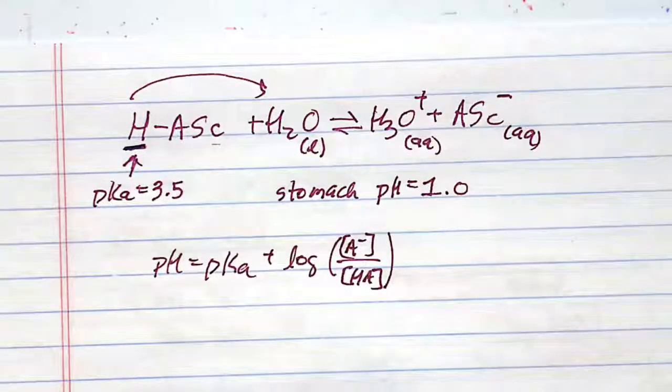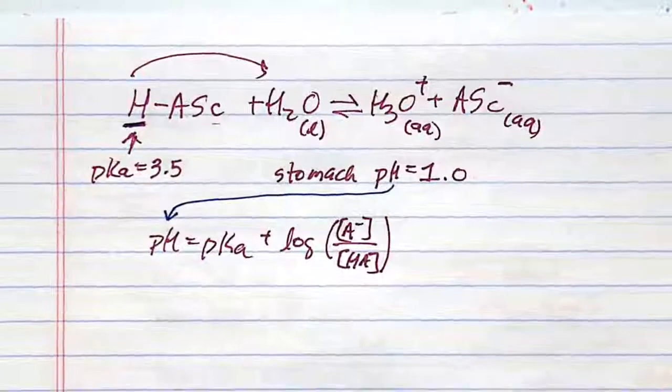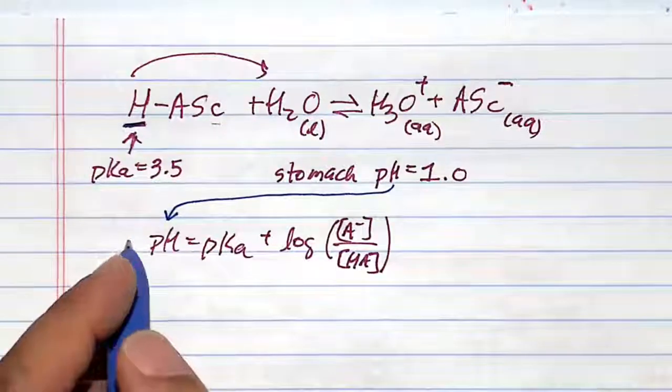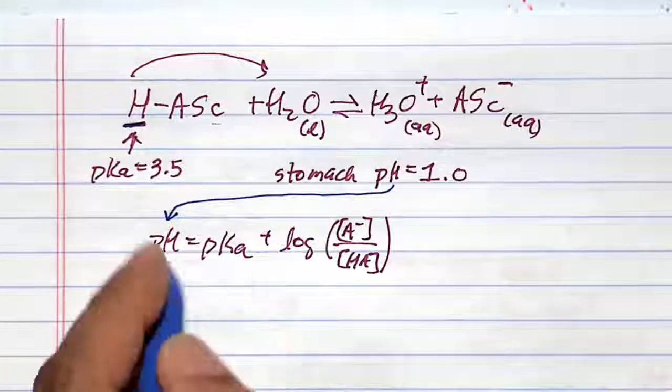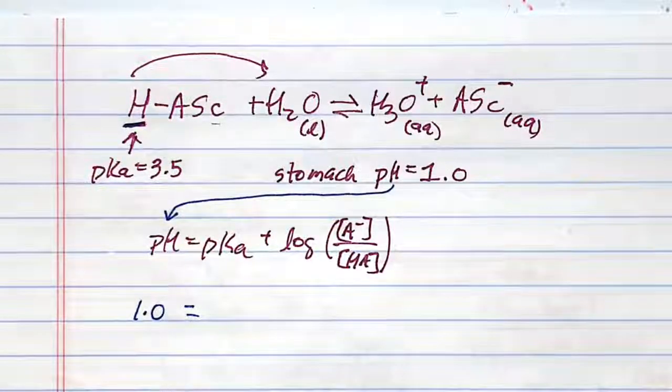What form is going to exist in the stomach? Well, this is pretty simple because when acetylsalicylic acid or aspirin or whatever painkiller it's known as hits the stomach, that's the pH environment it will encounter.